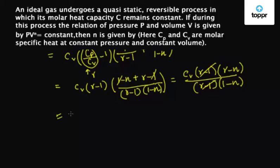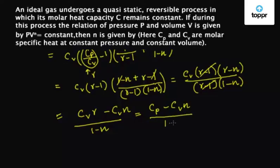Which equals Cv gamma minus Cv n upon 1 minus n. Now Cv upon Cv equals gamma, therefore Cv gamma equals Cp minus Cv n upon 1 minus n. Now solving for n, we get n equals C minus Cp upon C minus Cv.